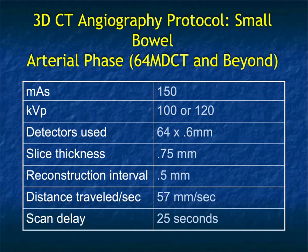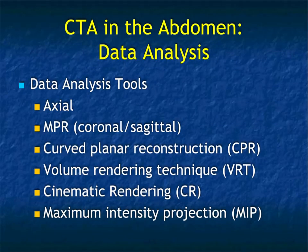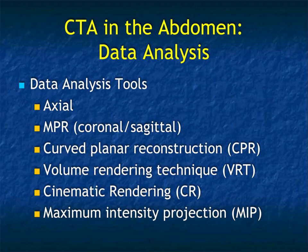In terms of scanning, I like thin section CT — 0.75 mm thick sections every 0.5 mm — which allows you to get really good multi-planar and 3D imaging when you need it. For data analysis, axials and multi-planar are the two most critical. MPRs, particularly sagittal for looking at the origin of the mesenteric vessels and coronal for looking at transition points. Curved planar doesn't help me very much; volume rendering is very good for transition points; and MIP is always valuable to look at the mesenteric vessels, especially for vessel cutoff.